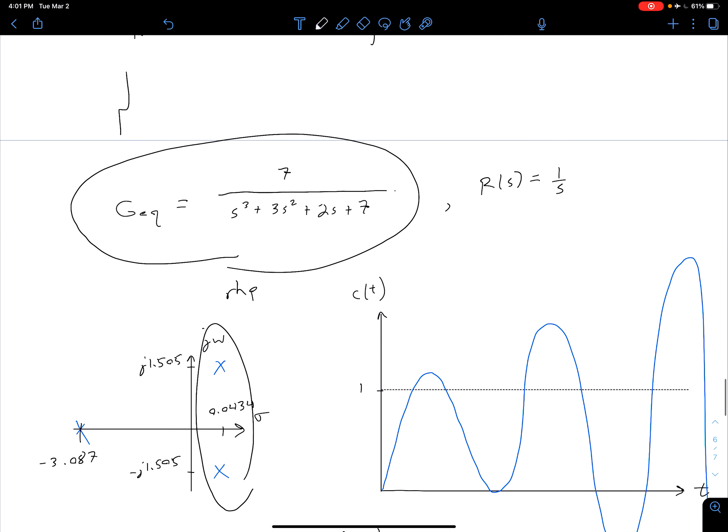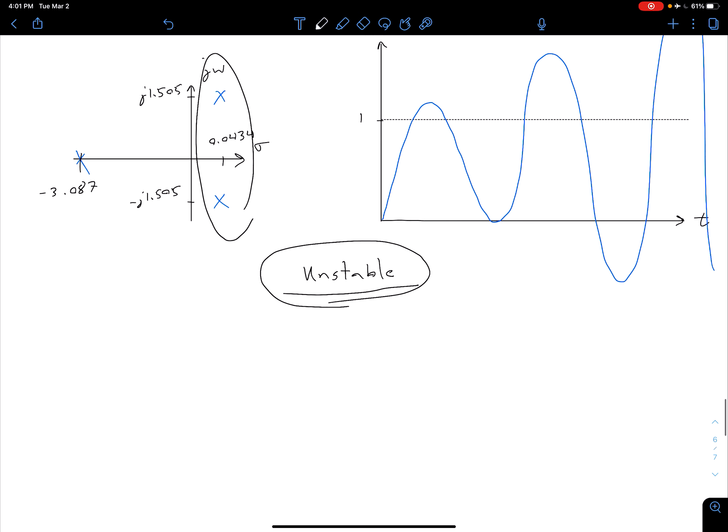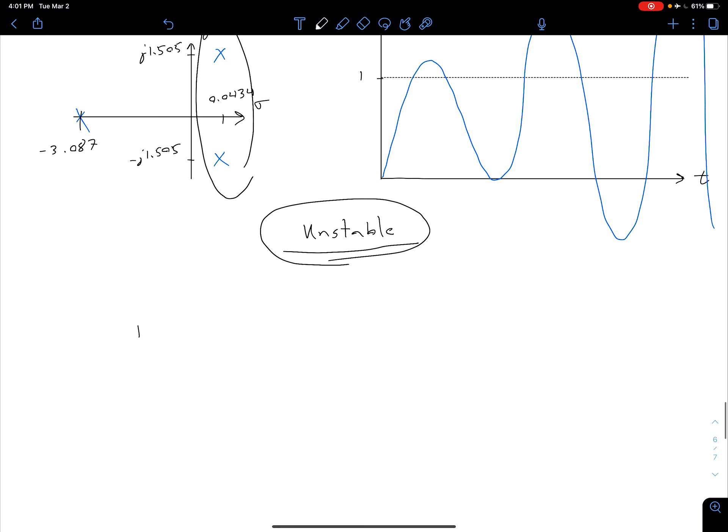So as we see here even though it didn't get flagged by those two quick checks the system was in fact still unstable. And again what this is pointing us towards is the fact that we need a more detailed method to check stability.